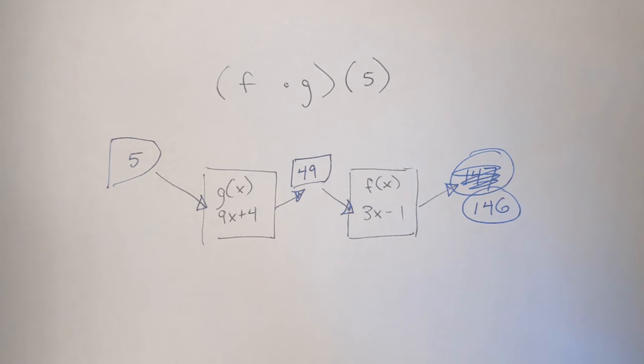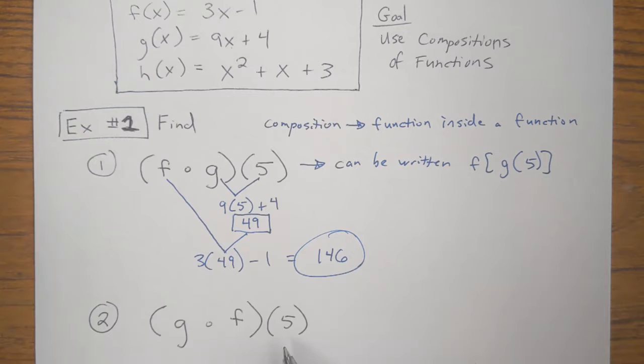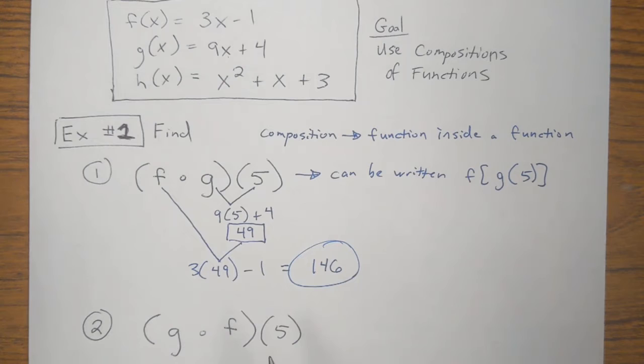So as we move to the second problem in this example, I want to know with a composition, if we flip the order, if we change the order of the composition, do we get the same answer? In math, this is called the commutative property. Are compositions of functions commutative? Can you switch the order and get the same answer? Well, let's try this out.